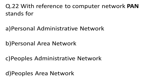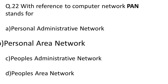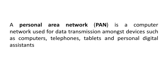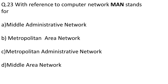Question twenty-two: PAN stands for Personal Area Network. It is a computer network used for data transmission among devices such as computers, telephones, tablets, and personal digital assistants. A simple example is Bluetooth — you can send data to other phones, but the range is very limited in a personal area network.